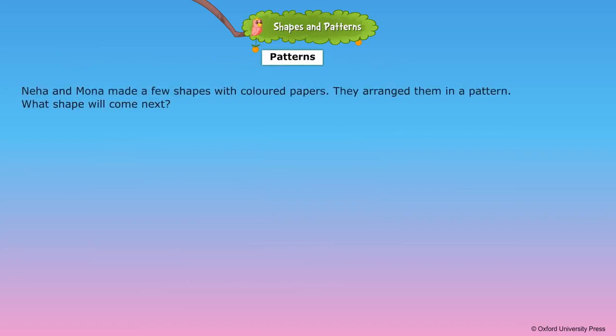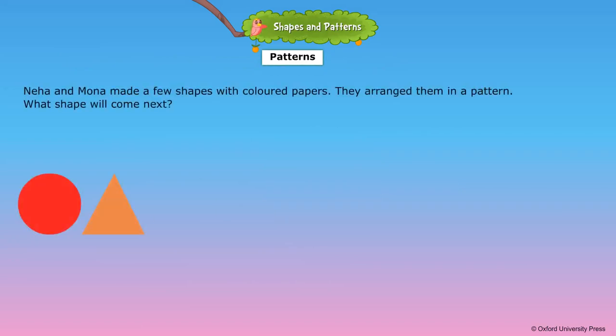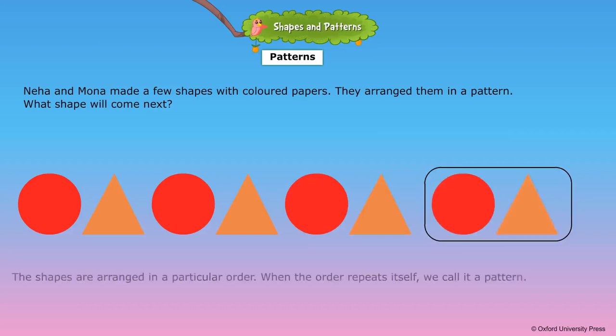Patterns. Neha and Mona made a few shapes with colored papers. They arranged them in a pattern. What shape will come next? The shapes are arranged in a particular order. When the order repeats itself, we call it a pattern.